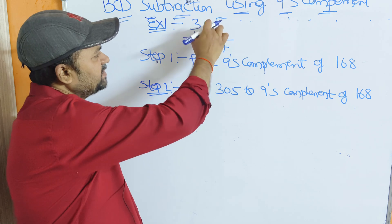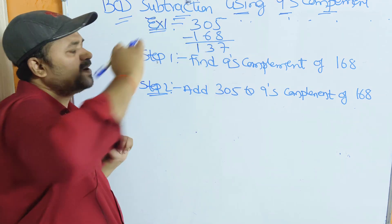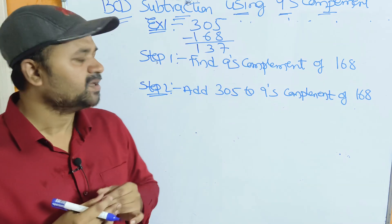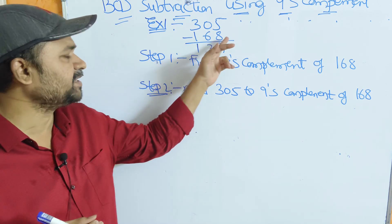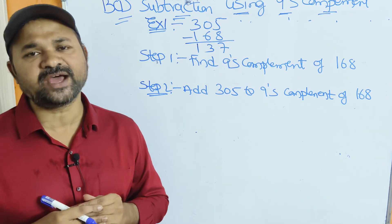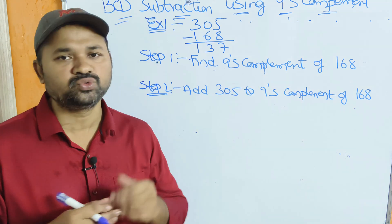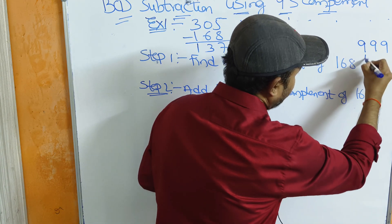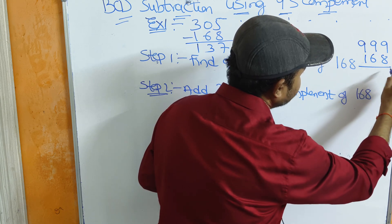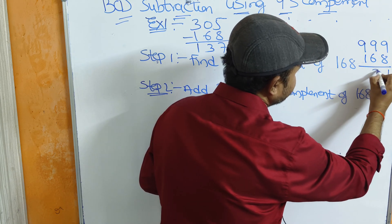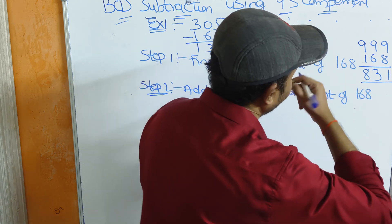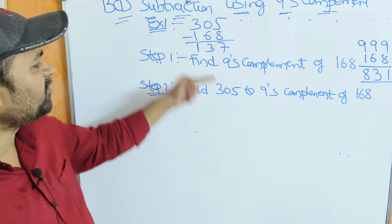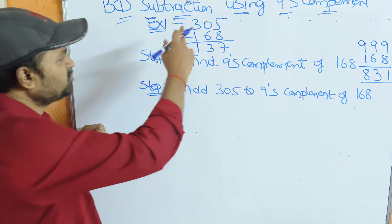15 minus 8 is 7, 9 minus 6 is 3, 2 minus 1 is 1, so 137 is the result. Now let us verify with the help of the steps. Step 1: find the 9's complement of the second number, that is 168. We simply subtract each digit from 9: 9 minus 8 is 1, 9 minus 6 is 3, 9 minus 1 is 8. So the 9's complement of 168 is 831. Step 2: add the first number 305 to the 9's complement of 168.